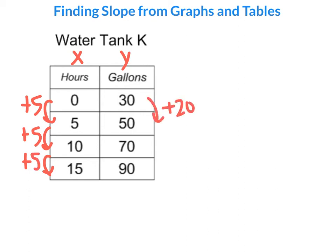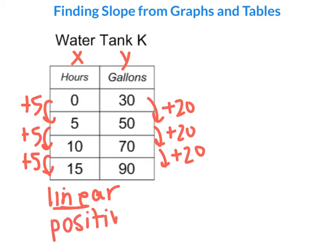Then we compare the gallons. We've added 20 gallons, we've added another 20, and we've added another 20. Quick note here: because the x is increasing by 5 each time and the y is increasing by 20 each time, when we graph it, it's going to be in a line, which again is what we call linear. And because everything is increasing, both the x and the y, this is going to be a positive relationship, so it's going to increase as it moves from left to right.